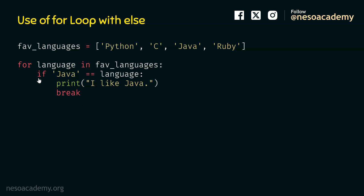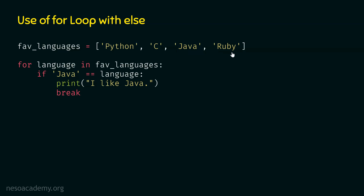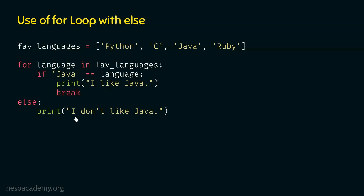We want to print 'I don't like Java' when the loop terminates normally, not abnormally — meaning not when the break keyword is encountered, but when the loop has completely read through the list. So we create the else block. Within this else block, we add: print 'I don't like Java'. When 'I like Java' is printed, 'I don't like Java' will not be printed, and vice versa.